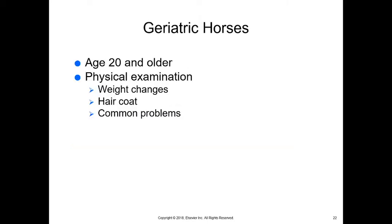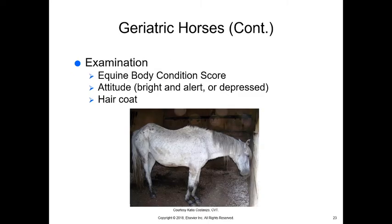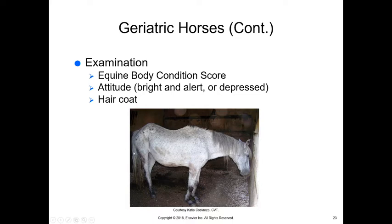Horses are considered geriatric at age 20 or older. Physical examination of geriatric horses includes looking for weight changes and hair coat condition, performing an equine body condition score, assessing musculature along the spine and neck, evaluating overall body and muscle mass, and assessing attitude — whether the horse is bright and alert or appears depressed. We also check whether the horse can maintain proper leg and fetlock posture and whether it is shedding its coat properly.